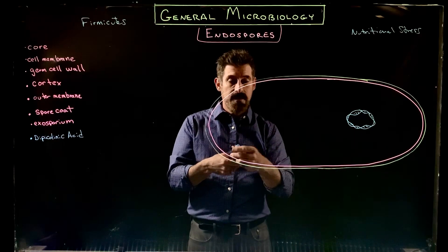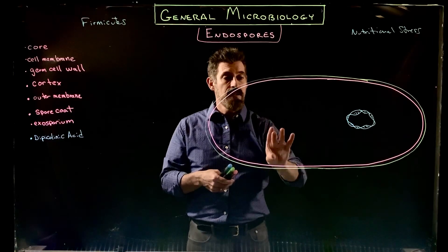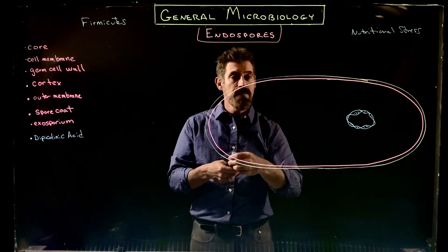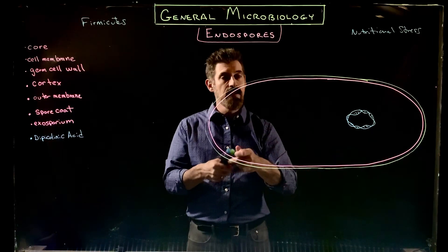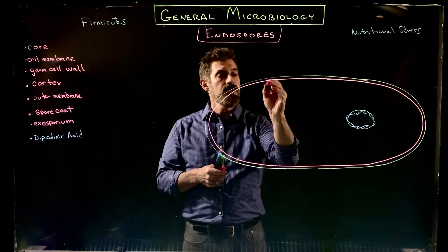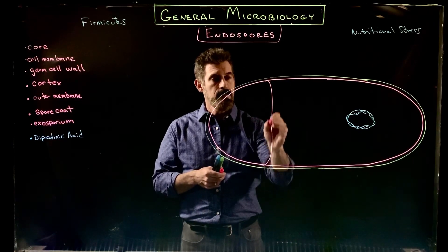In this particular case, what happens is that a septum is going to be formed instead of in the middle of the cell — it's going to be formed off-set.